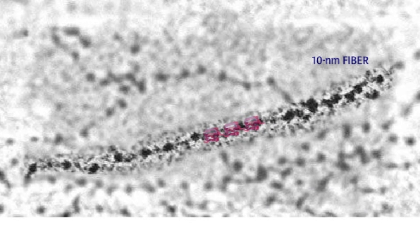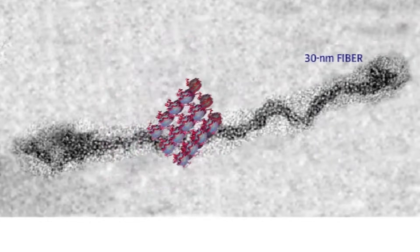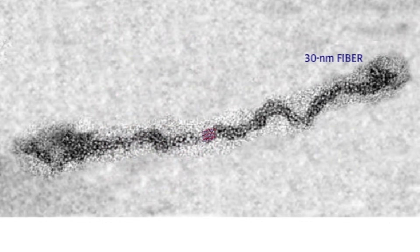The 10-nanometer fiber is further coiled to form the 30-nanometer fiber, where six nucleosomes make one turn. The 30-nanometer fiber then loops into scaffold proteins when chromosomes condense. DNA packaging has an important role in gene expression.